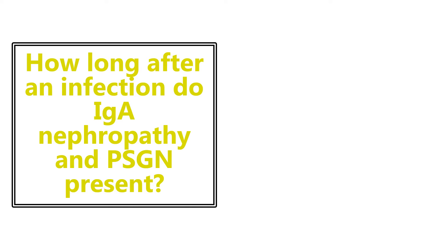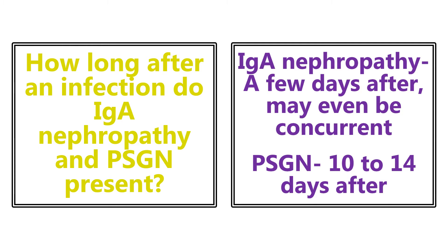How long after an infection do IgA nephropathy and post-streptococcal glomerulonephritis present? IgA nephropathy is typically within a few days — it may even be concurrent with the infection. Post-streptococcal glomerulonephritis, on the other hand, presents 10 to 14 days after. So if the hematuria and acute kidney injury appear in the shorter timeframe, think IgA nephropathy; if it's been two-plus weeks, think post-streptococcal glomerulonephritis.